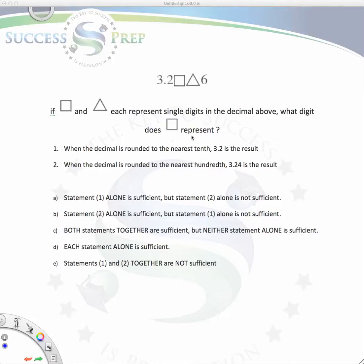When you encounter a question like this on the GMAT, you have to understand what the meaning of the words tenth and hundredth play a role in a question like this. So when you take a look at this number 3.2□△6, it's asking us to figure out the value of this square.